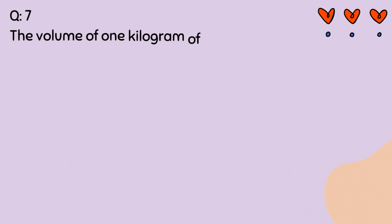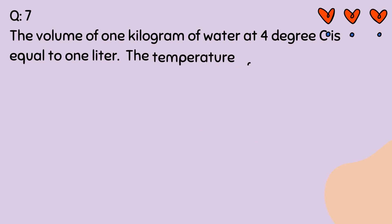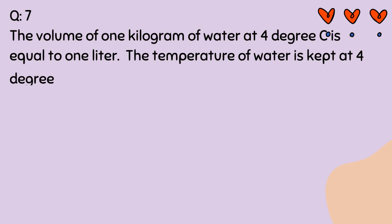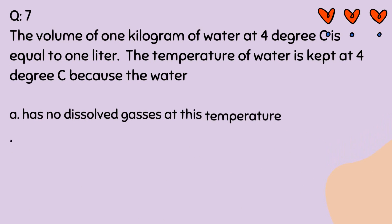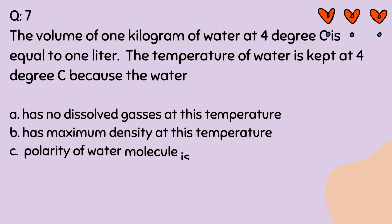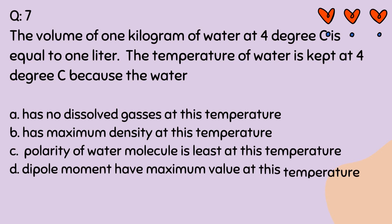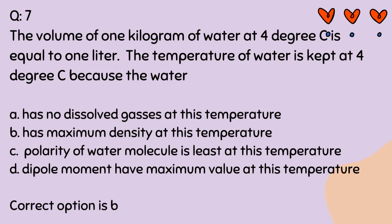Question number 7. The volume of 1 kg of water at 4 degrees Celsius is equal to 1 liter. The temperature of water is kept at 4 degrees Celsius because the water: A. Has no dissolved gases at this temperature. B. Has maximum density at this temperature. C. Polarity of water molecule is least at this temperature. D. Dipole moment has maximum value at this temperature. Correct option is B.